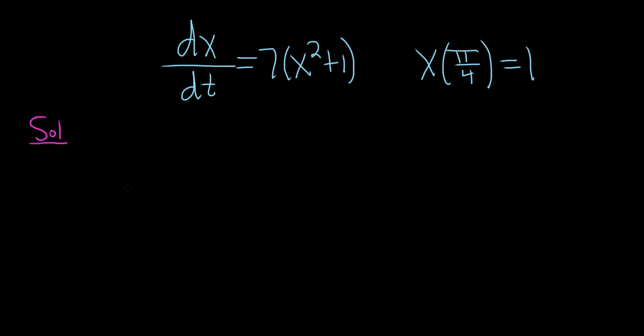We're going to try to separate the variables. That means we want to get all of the x's on one side together with the dx and all of the t's on one side together with the dt. To do that, we'll start by dividing by x squared plus 1 and multiplying by dt. That will give us dx over x squared plus 1, and then multiplying by dt will give us 7 dt.